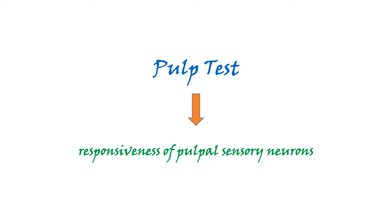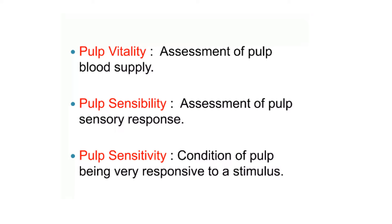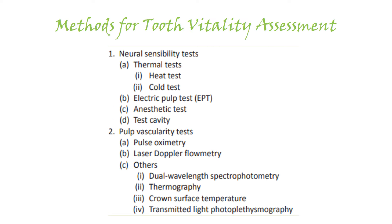These tests tell us about the response of the pulpal sensory neurons present in the tooth. There are three important terms: pulp vitality, sensibility, and sensitivity. Vitality relates to vascular supply — assessing pulp blood supply. Sensibility means assessment of the pulp sensory response. Sensitivity refers to the pulp's responsiveness to a stimulus, such as hot or cold. All three terms are interconnected but have specific meanings.